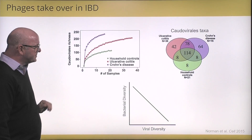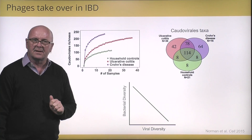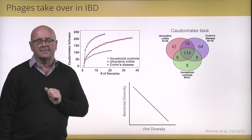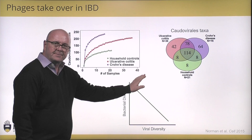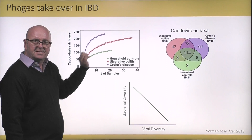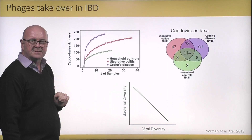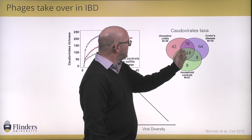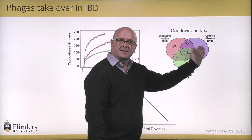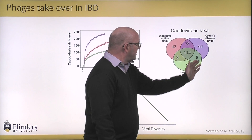In some previous work, my collaborators Scott Hanley, Dave Wang, and others at Washington University in St. Louis looked at the Caudovirales in IBD. What they found is that if you compare the number of phages across different samples, you see higher richness of phages in either ulcerative colitis or Crohn's disease. When they looked at the specific taxa they could recover, they found a lot of taxa in common between all three states, but also a massive expansion — many more taxa present in either disease state.